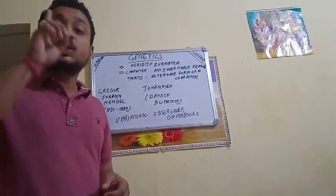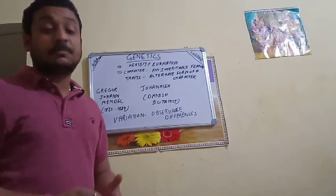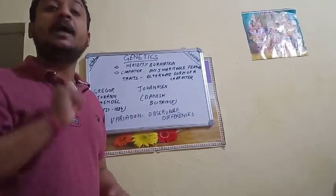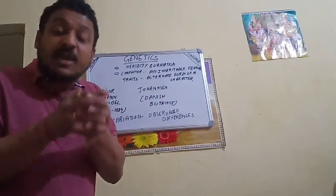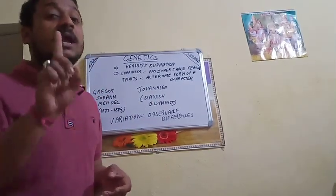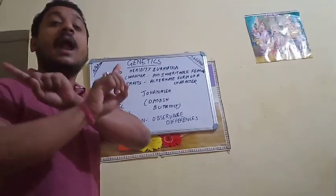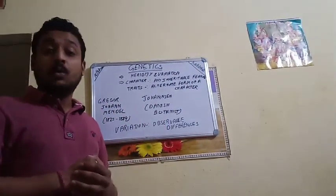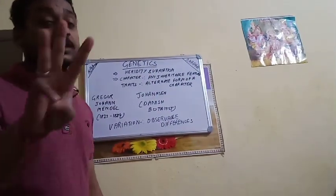In sexual reproduction only, variation takes place — because sexual reproduction involves two parents and the sharing of gametes. In asexual reproduction, only one parent is involved and no sharing of gametes takes place. Variation is generally because of three things.